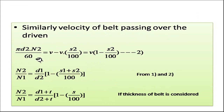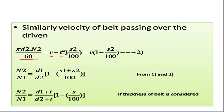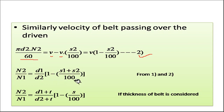Similarly, the velocity of the belt passing over the driven pulley is pi D2 N2 / 60. This equals V minus V times (S2 / 100), representing the slip when power or velocity is transferred from the belt to the output pulley. Finally, the velocity received on the output pulley equals V times (1 minus S2/100). Using these two equations together, we find that N2/N1 = (D1/D2) times (1 minus (S1 + S2)/100), meaning the speed ratio depends on the diameter ratio.